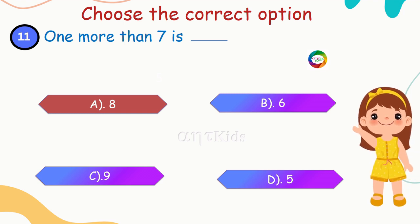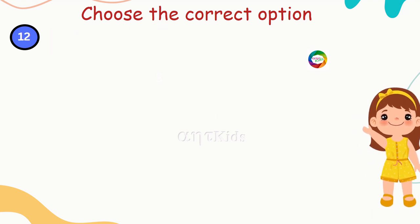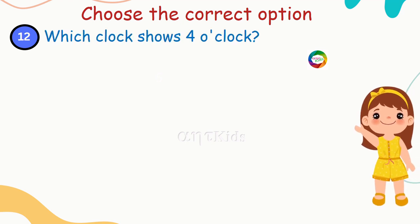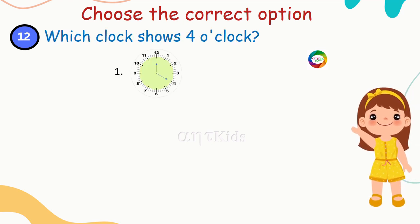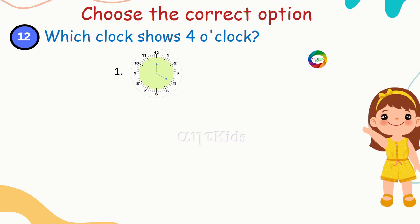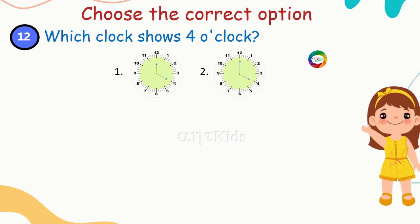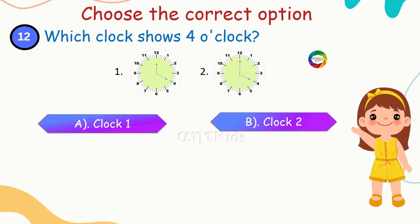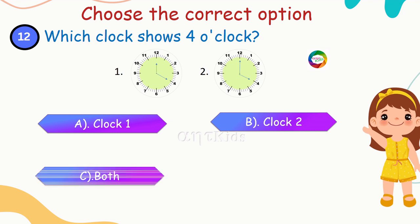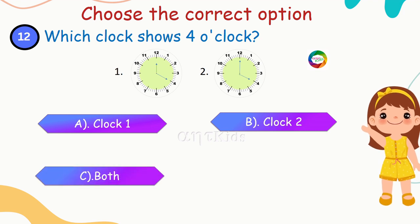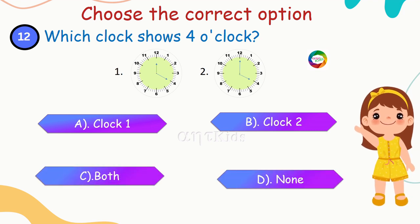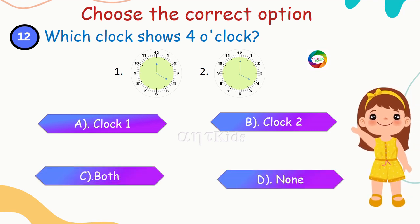Next question: which clock shows four o'clock? First one or second one? Options are: clock one, clock two, both the clocks, none of the clocks. Which is your correct answer?